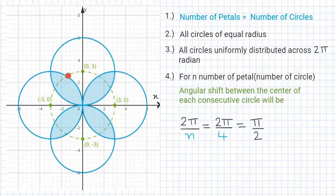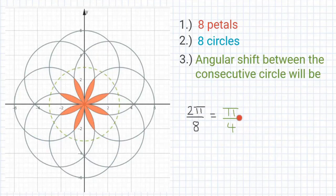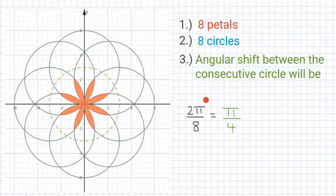You can find the coordinate of each point using the parametric form. Similarly, if I say I want a flower of 8 petals, I will be using 8 circles to draw it. Since there are 8 circles and they need to be uniformly distributed, the angular shift between consecutive circles will be 2π/8 = π/4. So the center of each circle will have an angular shift of π/4.